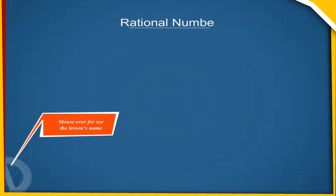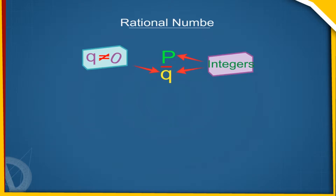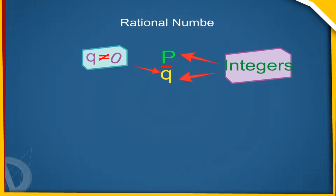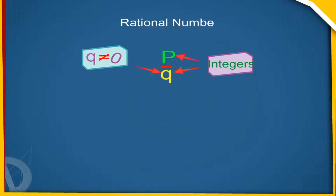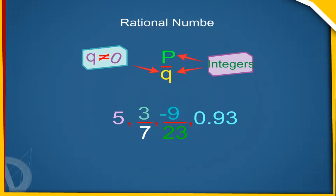Rational number. A number which is of the form, or can be expressed in the form P upon Q, where P and Q are integers and Q not equal to 0, is called a rational number. For example, 5, 3 by 7, minus 9 by 23, 0.93, etc., are rational numbers.